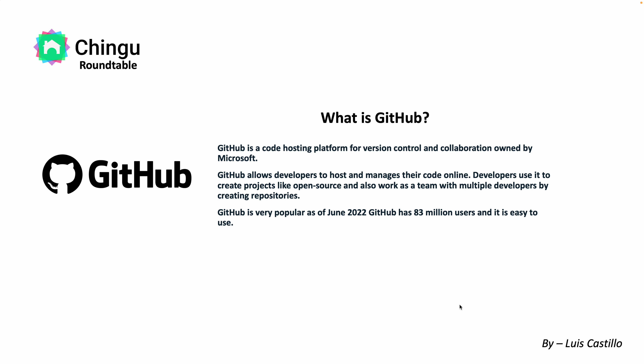What is GitHub? GitHub is a code-hosting platform for version control and collaboration, owned by Microsoft. GitHub also allows developers to host and manage their code online. Developers use it to create projects like open source and also work as a team with multiple developers by creating repositories. As of June 2022, GitHub has 83 million users. It's a very easy tool to use. There are other ones like Bitbucket and GitLab that companies and people use, but GitHub is one of the main ones. The good thing is that it is free and open source — you can use it anytime.